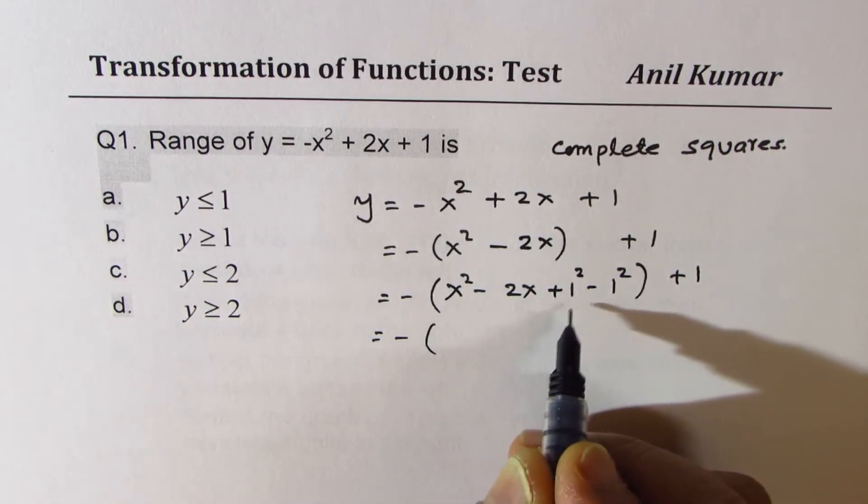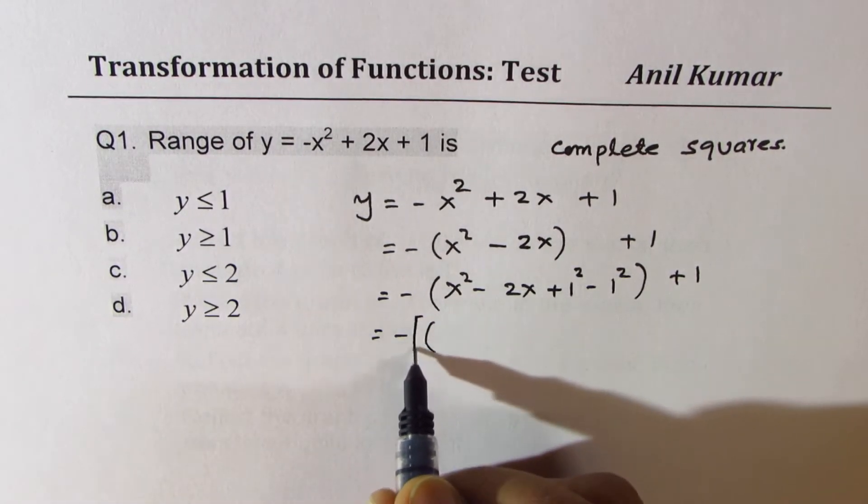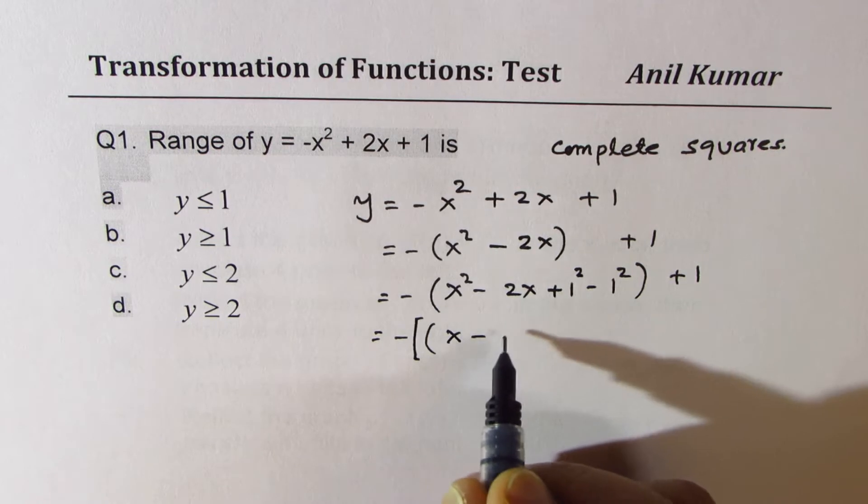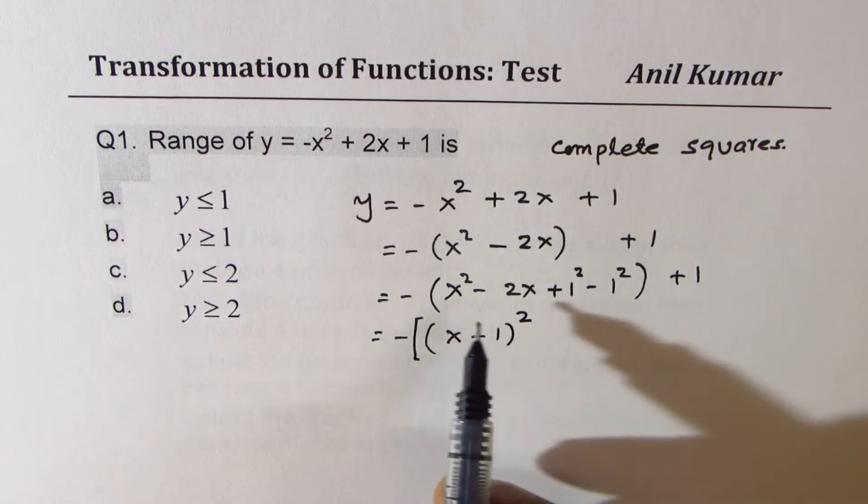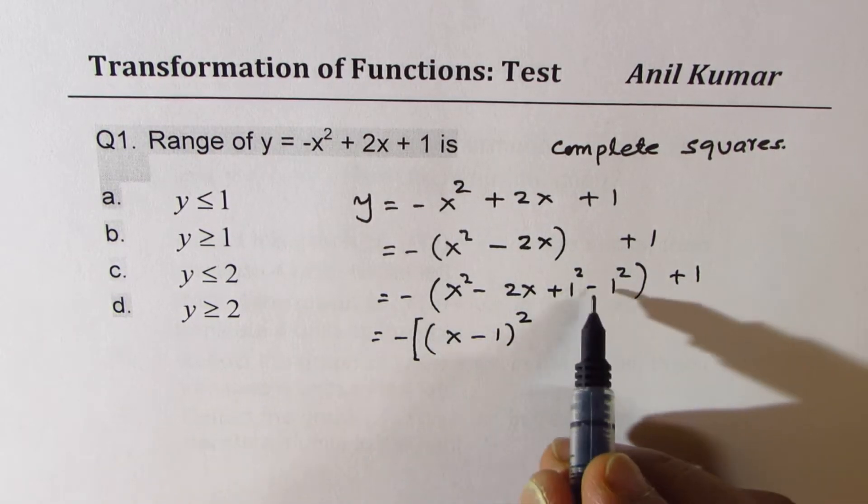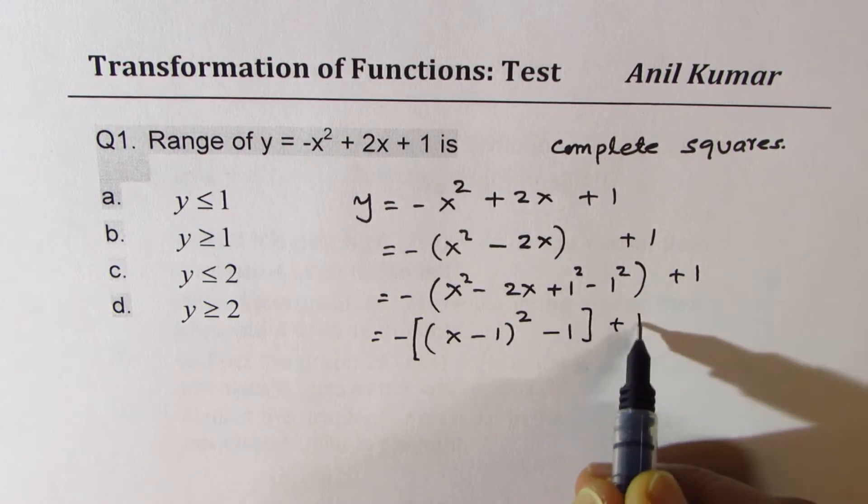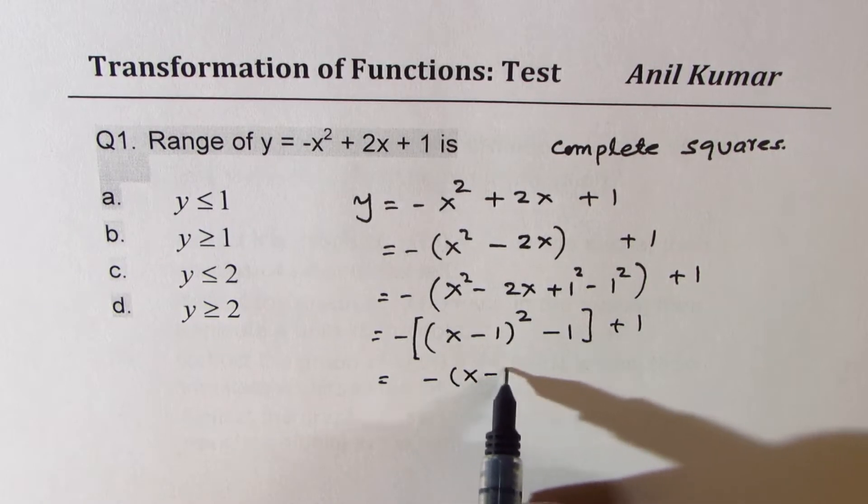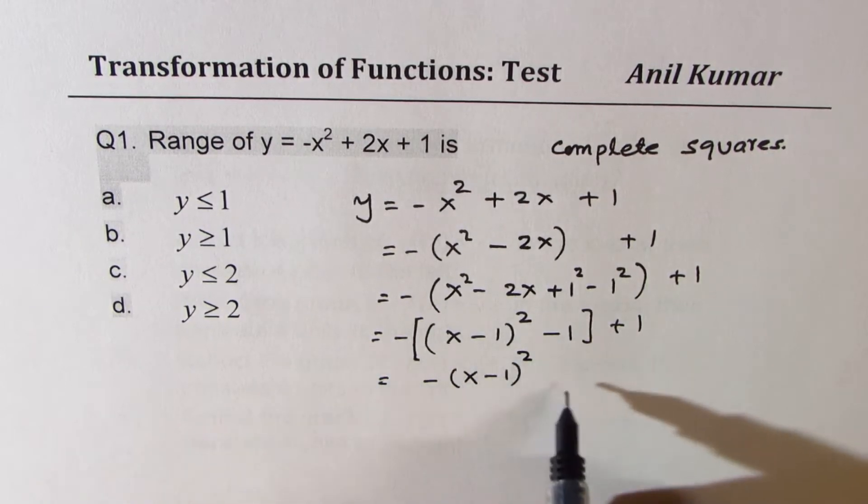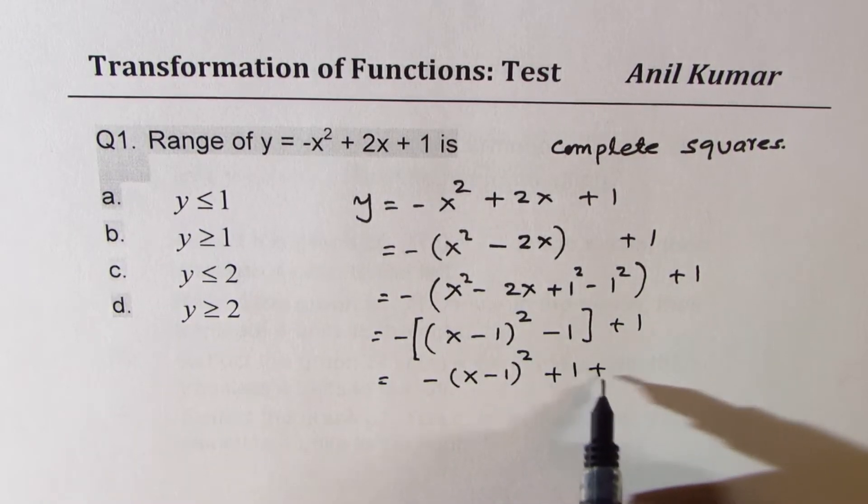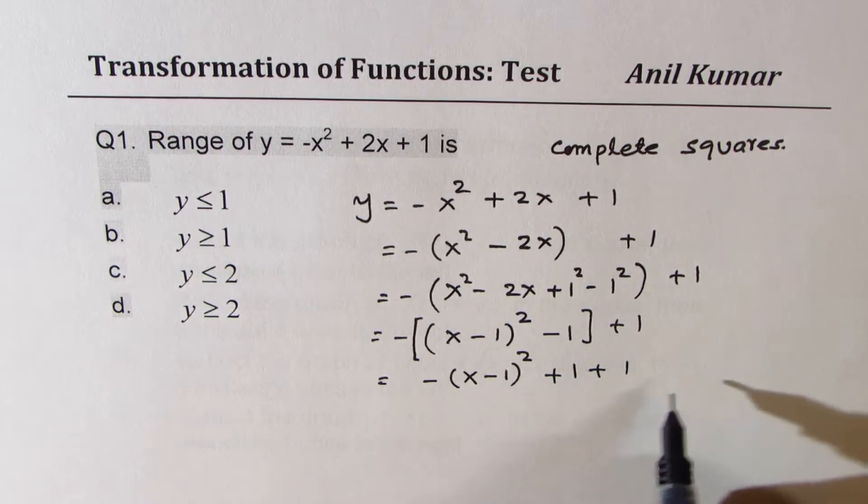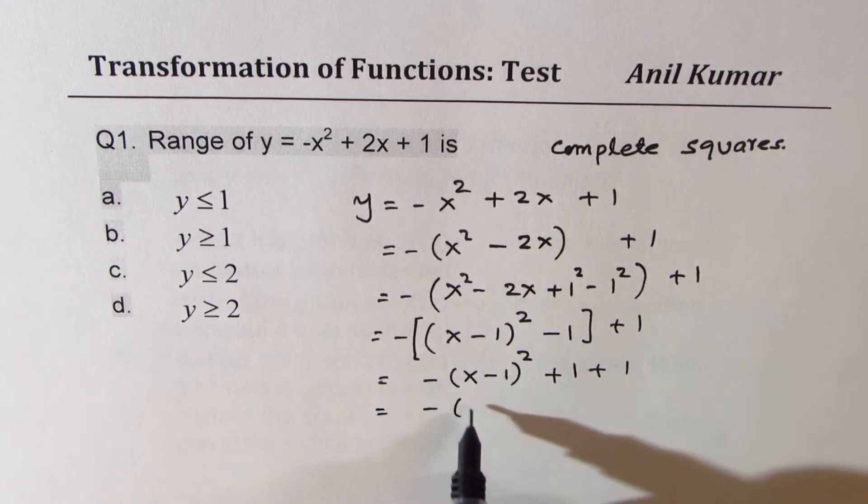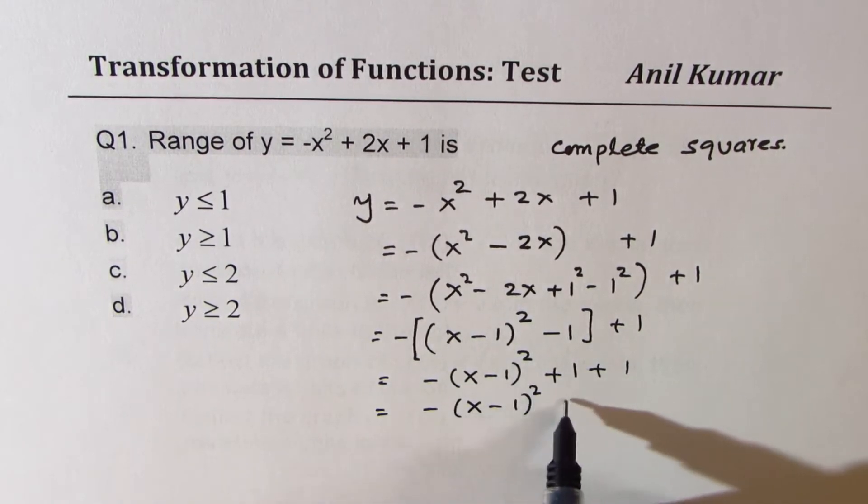Now, first three terms form a perfect square. Let me use square brackets here. So we get x minus 1 whole square. These three terms. And minus 1 square is minus 1 plus 1. Let's open the bracket now. So we get minus x minus 1 whole square, minus minus becomes plus 1 plus 1. So that gives you y equals to minus x minus 1 whole square plus 2.